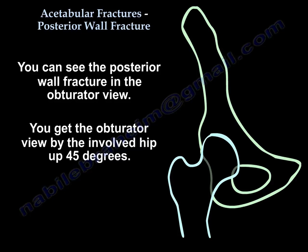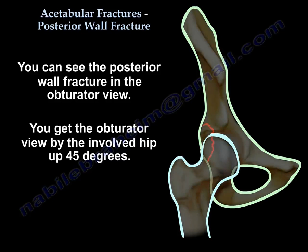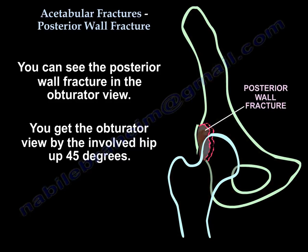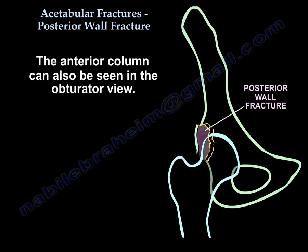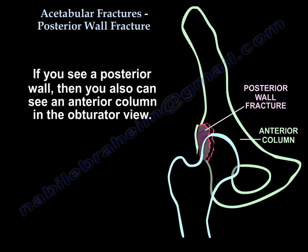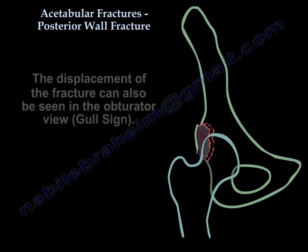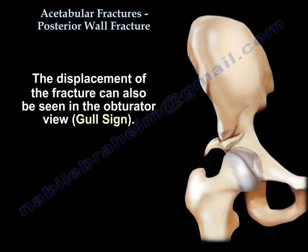You can see a posterior wall fracture in the obturator view. You get the obturator view by placing the involved hip up 45 degrees. We can also see the anterior column in the obturator view — if you see a posterior wall, then you can also see the anterior column. The displacement is also visible in the obturator view, and this is called the gull sign.